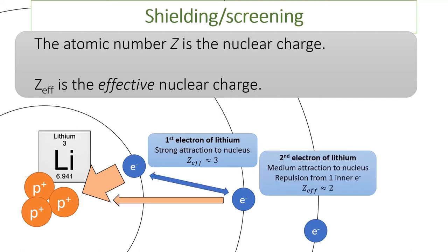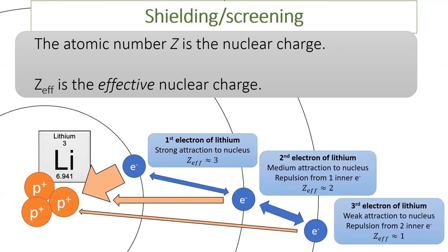The second electron of lithium is attracted by the 3 protons, but it is also repelled by the one closer electron. This electron feels an effective nuclear charge of 2. The third electron is also attracted by the 3 protons in the nucleus, but it is repelled by both inner electrons. This third electron feels an effective nuclear charge of only 1. In other words, the outer electron is the least attracted to the nucleus.